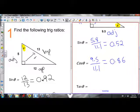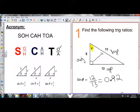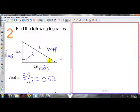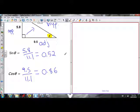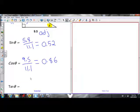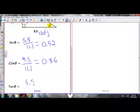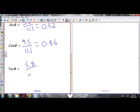Tan, TOA, tan is opposite over adjacent, so that gives me 5.8 over 9.5. 5.8 over 9.5, and that's equal to 0.61.